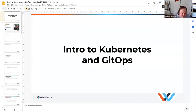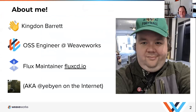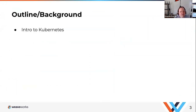Thanks everyone for joining us today. I'm Kingdon, an open source engineer at Weaveworks and a Flux maintainer. Today we're going to talk about Kubernetes from a beginner perspective and GitOps — specifically, what makes Kubernetes useful for businesses and how does GitOps evolve that to be even more useful. At a 30,000-foot level, Kubernetes is container clusters: you're building containers and running them on the cloud or on a cluster of computers. It's a modern operational stack.